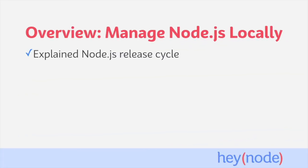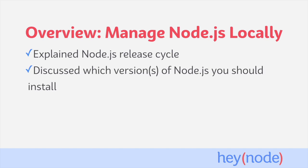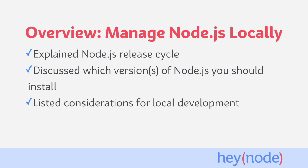To recap, in this tutorial we talked about the Node.js release cycle, and the different kinds of releases such as active LTS, maintenance LTS, and the current release. We talked about why you should use an active LTS in production, and also recommended that you use it for your local development as well. Overall, we talked about some of the considerations when setting up your local development environment, such as making sure you're using the right version of Node.js, managing those versions, as well as how to manage your environment variables.